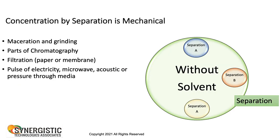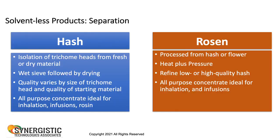For solventless approaches: grinding and separation, using pulses of electricity, microwave, or acoustic methods to knock off trichomes—things that don't involve a solvent. Then you take the product that's left over after the solventless step and move it through a solvent. Whether you're making hash or rosin, you're taking the isolation of the trichomes, sizing them, and knowing what's in them. With rosin you're using pressure—squeezing them much like you would squeeze an orange—getting a different set of compounds, but both of these are non-solvent.